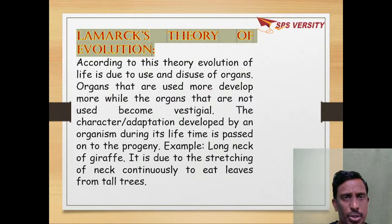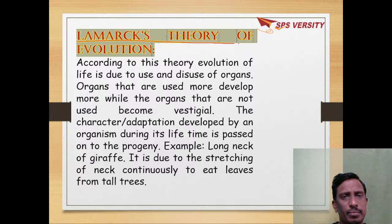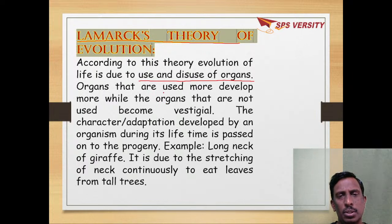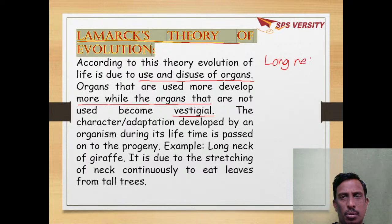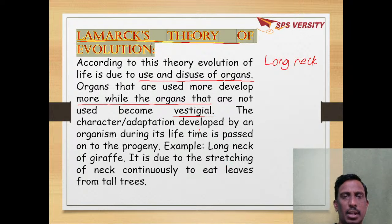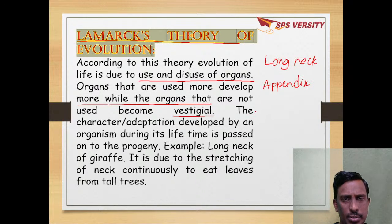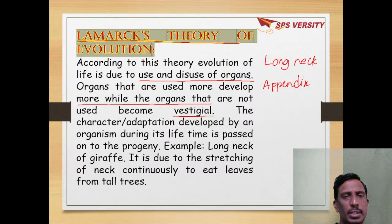After Darwin's theory of natural selection and branching descent, there is Lamarck's theory of evolution, which says about use and disuse of organs. The organs which we use, the more they develop. The organs which we do not use become functionless — vestigial. For example, the long neck of giraffe developed through continual stretching. Vestigial organs: our vermiform appendix had function in our ancestors but has become non-functional. However, Lamarck's theory of evolution is not fully acceptable.